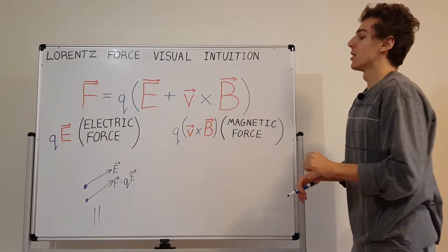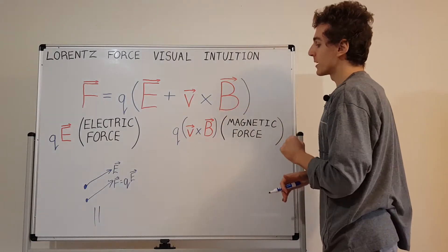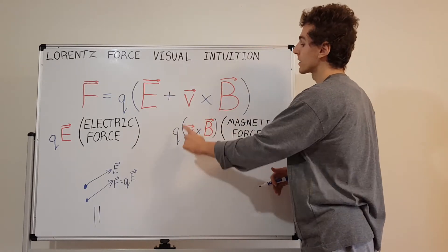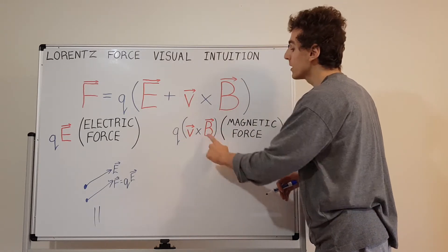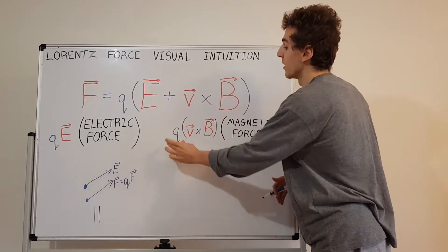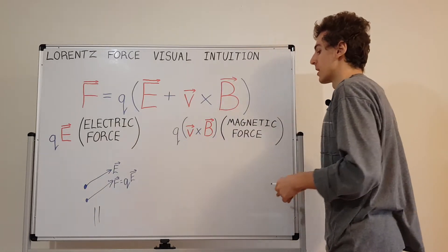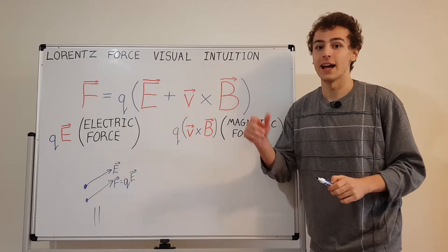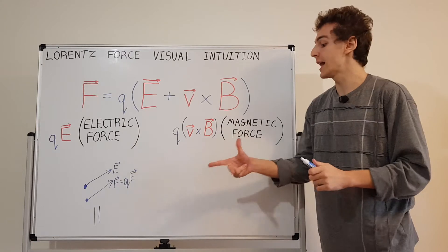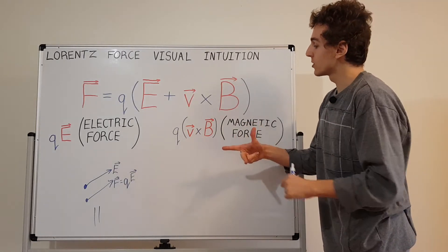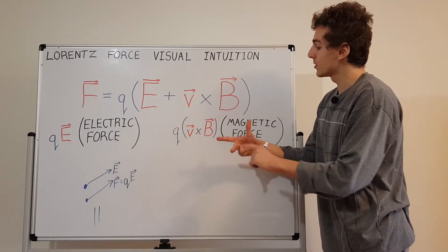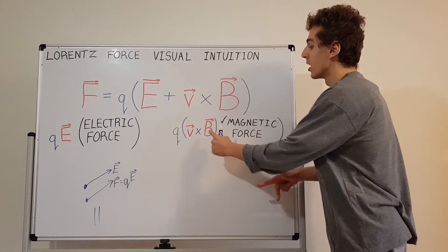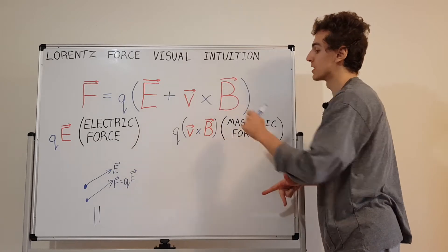What does it look like for a magnetic force? A magnetic force doesn't just take the scalar multiple of the B field — it takes the cross product of the velocity with the magnetic field, and then scales it by the charge. We actually need three dimensions for this. Take your right hand and use the right-hand rule: index finger as velocity, middle finger as the magnetic field B, and your thumb will point in the direction of the magnetic force.